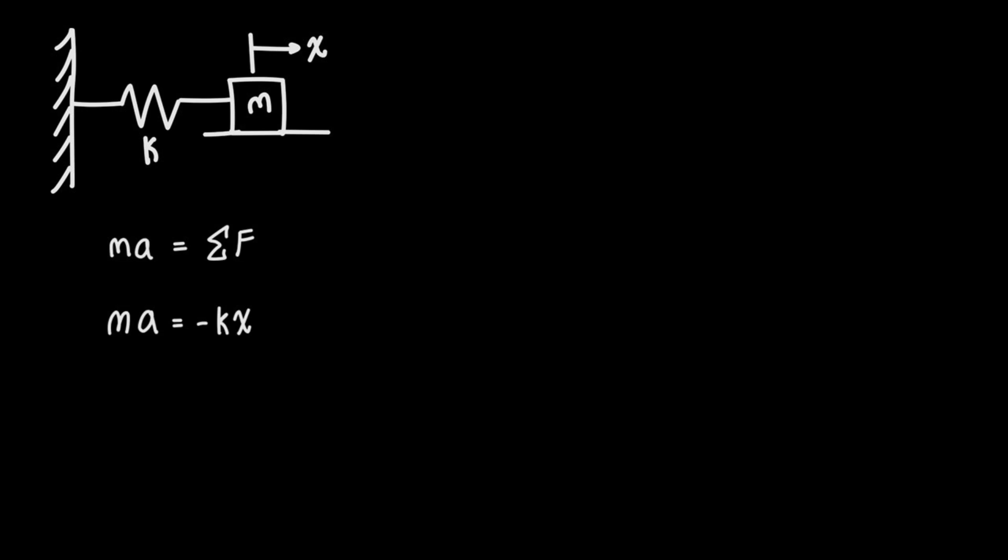If x is positive, the spring is going to be stretched, so the force is going to be pointing to the left, or negative. If x is negative, then the spring is going to be compressed and the spring force will be pointing to the right. We can take the mass and bring that over to the right-hand side of our equation, and what we get is that the acceleration equals negative k over m times x.